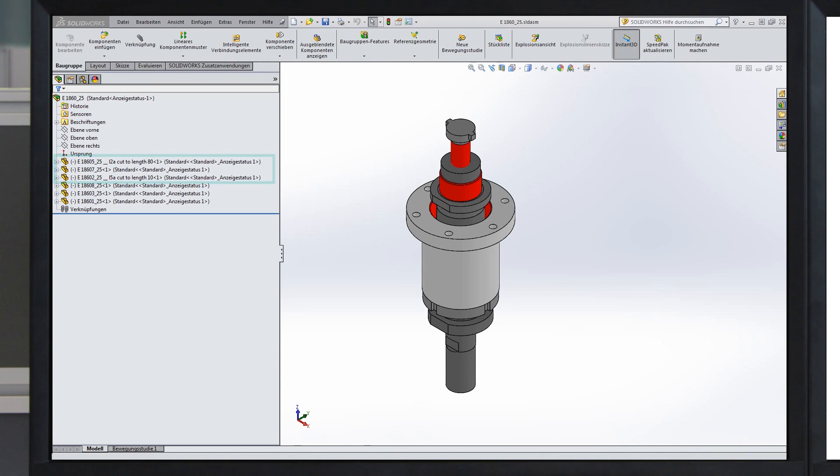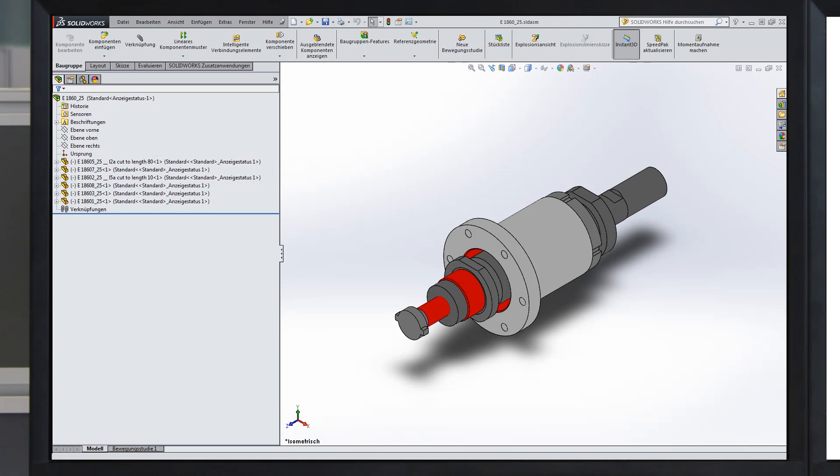In the CAD, the dimensions for cutting the components to length are shown and therefore immediately available for the subsequent machining process.